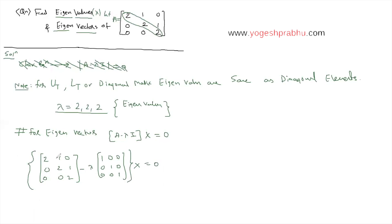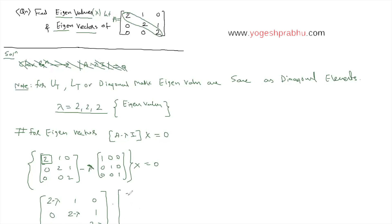Subtracting element by element, we multiply lambda inside. So lambda times 1 gives lambda, making the first diagonal value 2 minus lambda. The off-diagonal values 1, 0, 1 remain the same, and the zeros remain 0. Only the diagonal values change, so we get: (2 minus lambda) on each diagonal position. This gives us the matrix A minus lambda I, which we then multiply by X — written as column matrix [X1, X2, X3] — equal to 0. Call this equation 1.